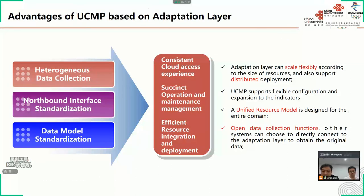Based on the adaptation layer, the UCMP can get consistent cloud resource access, simple operation and maintenance management, and efficient resource integration. Each module of the adaptation layer can be elastically scaled according to the amount of resources and also supports distributed deployment. The UCMP also supports flexible configuration and expansion of indicators. A unified resource model is designed for the entire domain. Other systems can connect to the adaptation layer directly and obtain the original data, improving the efficiency of heterogeneous cloud integration and the efficiency of scale expansion.